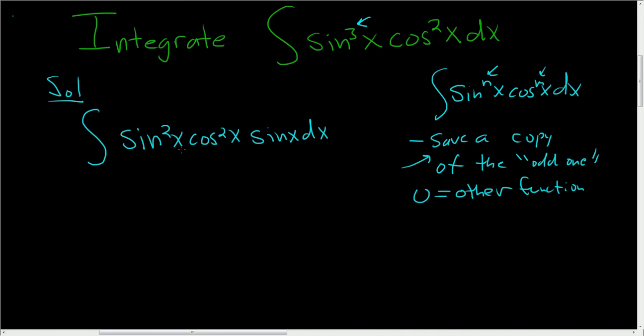Now if u is cosine, we still need to deal with this. So you use identities. Sin²x is 1 - cos²x, and then here you have cos²x, and then sin x dx.